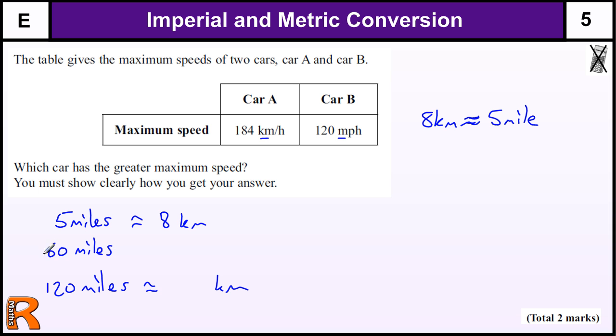So 5 times 12 is 60, that's approximately 12 eighths, which is 96 kilometers. And then I just need to double that to get to 120. So double 96: double 90 is 180, double 6 is 12, so I get 192 kilometers.